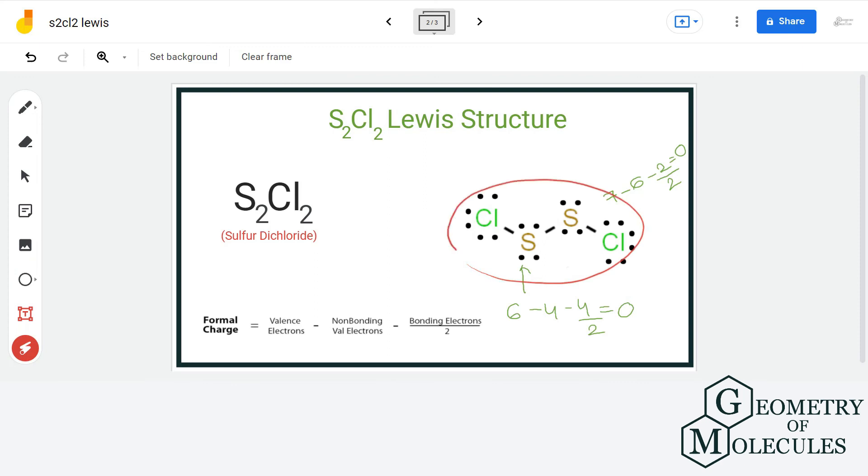Thus, each atom present in this structure has a formal charge of zero. Thus, this is the final Lewis structure of S2Cl2.